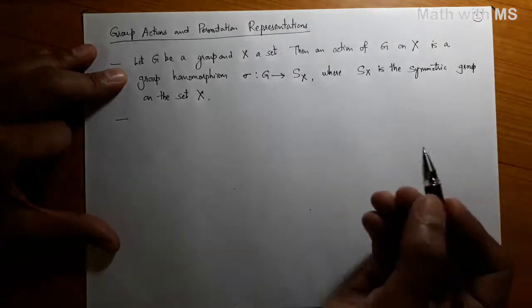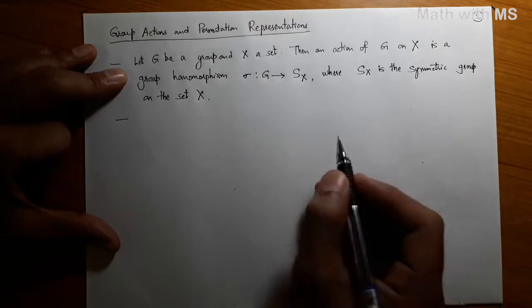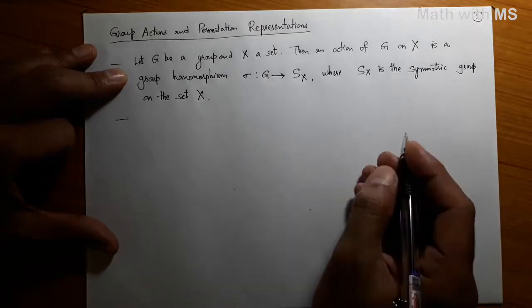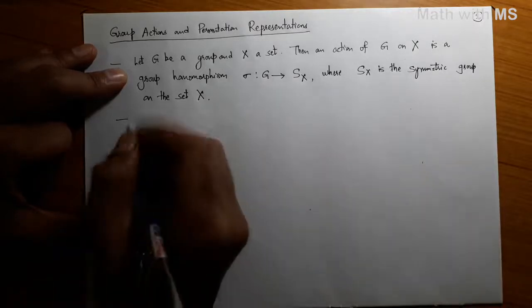What we are going to see is how a given action of a group on a set gives rise to representations. Those representations will be called permutation representations, since they arise from the permutation group of a set X on which your group acts. Before proceeding further, let us discuss some ideas about group actions which we have not talked about so far.